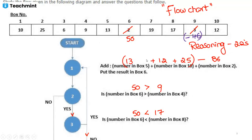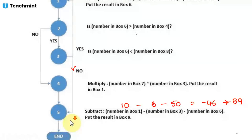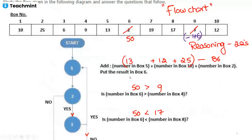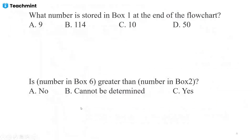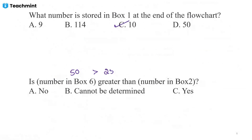At the end of the flow chart, they ask what number is stored in box 1. Box 1 was not changed throughout — it remains 10. For the next question, they ask about box 6 and box 9 at the end. Box 6 is 50, and we check: is 50 greater than the number in box 2 (which is 25)? Yes — so the answer is confirmed.